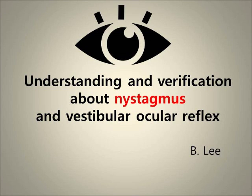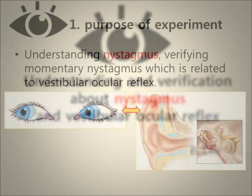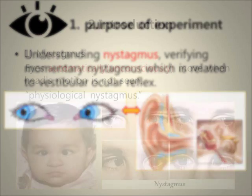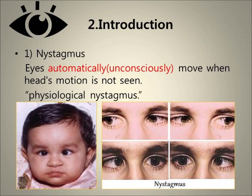The purpose of this experiment is to understand nystagmus and verify momentary nystagmus, which is related to the vestibular ocular reflex. The vestibular ocular reflex occurs when the head is normally moved, but the reflex and disease can occur without reference to motion of the head. Lateral abnormality of the scala vestibular triggers chaining of abnormal asymmetric action potential frequency, so the eyes automatically move when the head's motion is not detected. That physical phenomenon is nystagmus.